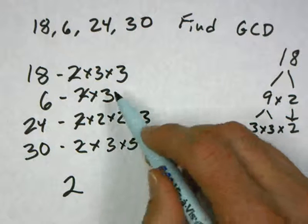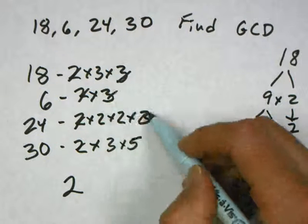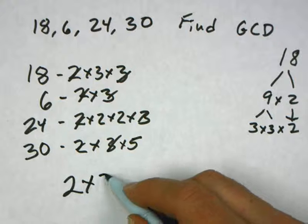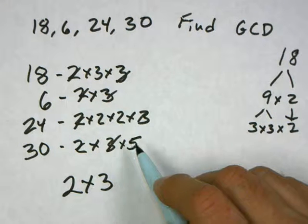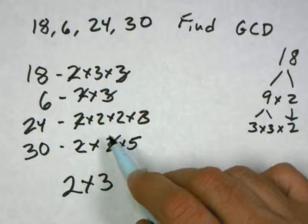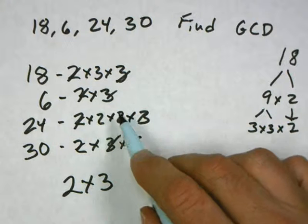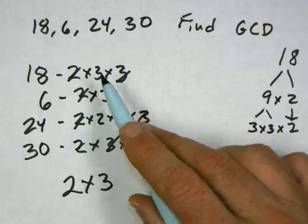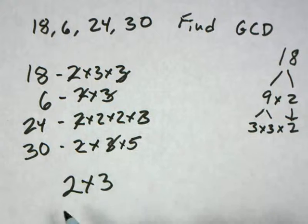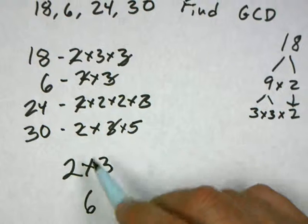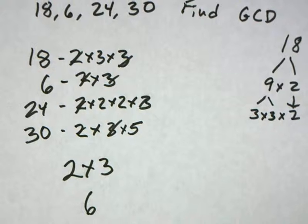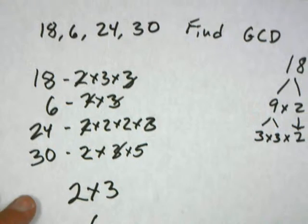So I take away these 3s. And now, 5 doesn't have any corresponding 5s in any of these others. And this 3 doesn't. They'd have to be a 3 in every other number. So 2 times 3 is 6. And so, according to this method, 6 is my greatest common divisor. But I don't need to rely on the method. I can check it.